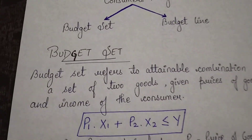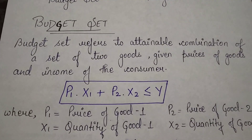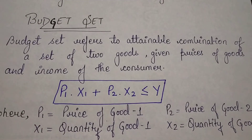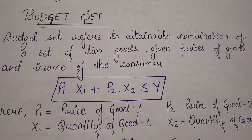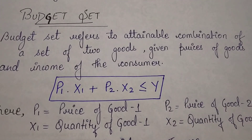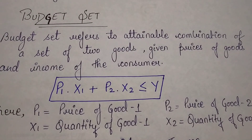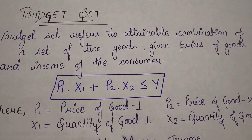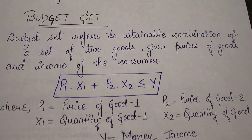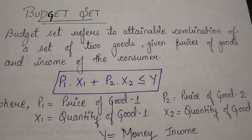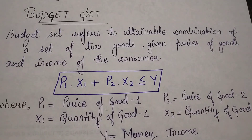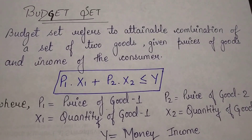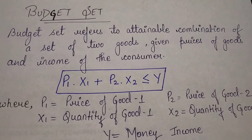First of all we will discuss about budget set. Stay with me as I'm going to discuss the concept on the basis of examples, graphs and schedules, and I'm sure you will clearly understand the concept of budget set and budget line. So what is budget set? The budget set is the total money spent on the combination of two goods, which has to be less than or equal to the given income.